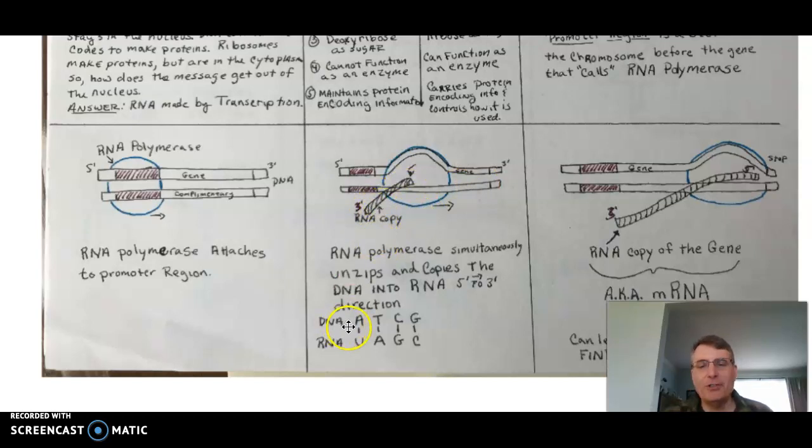Wherever there's an A, the RNA is going to put a U. Wherever there's a T, you put an A. Wherever you have a C, you put a G. And wherever there's a G, you put a C. Tomorrow you're going to have an assignment where you'll actually transcribe a DNA molecule, so remember this code so you can get that correct.